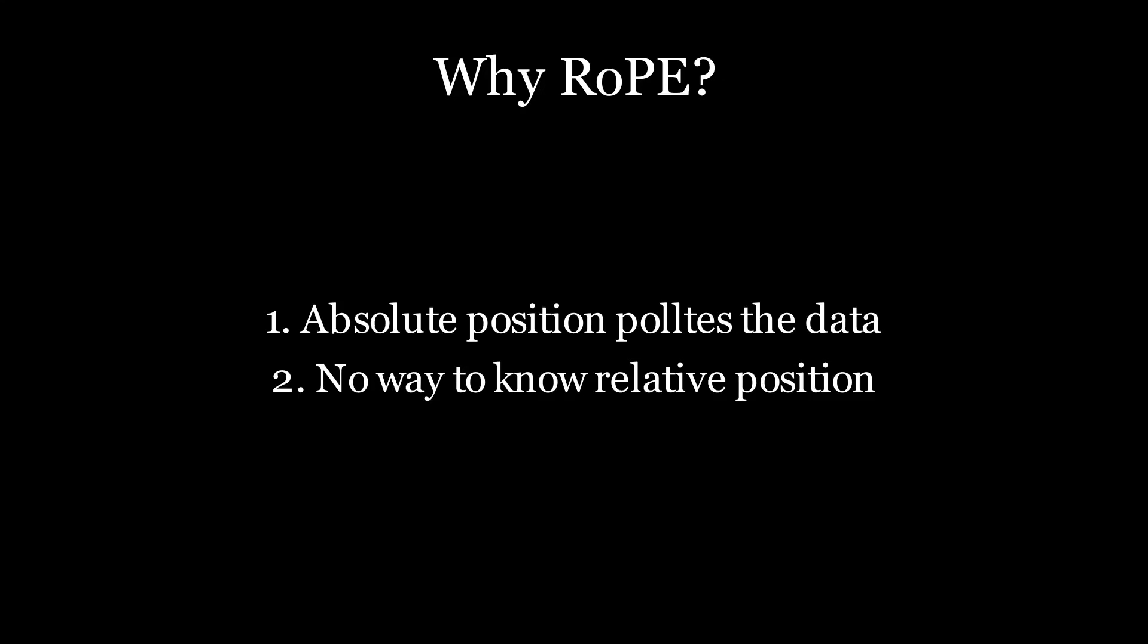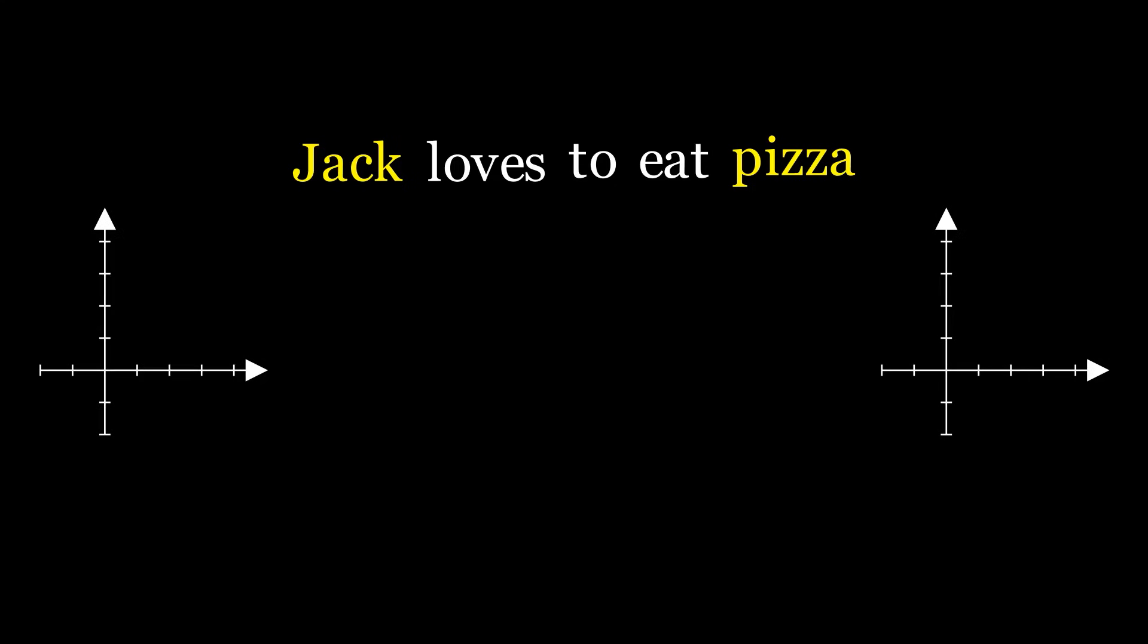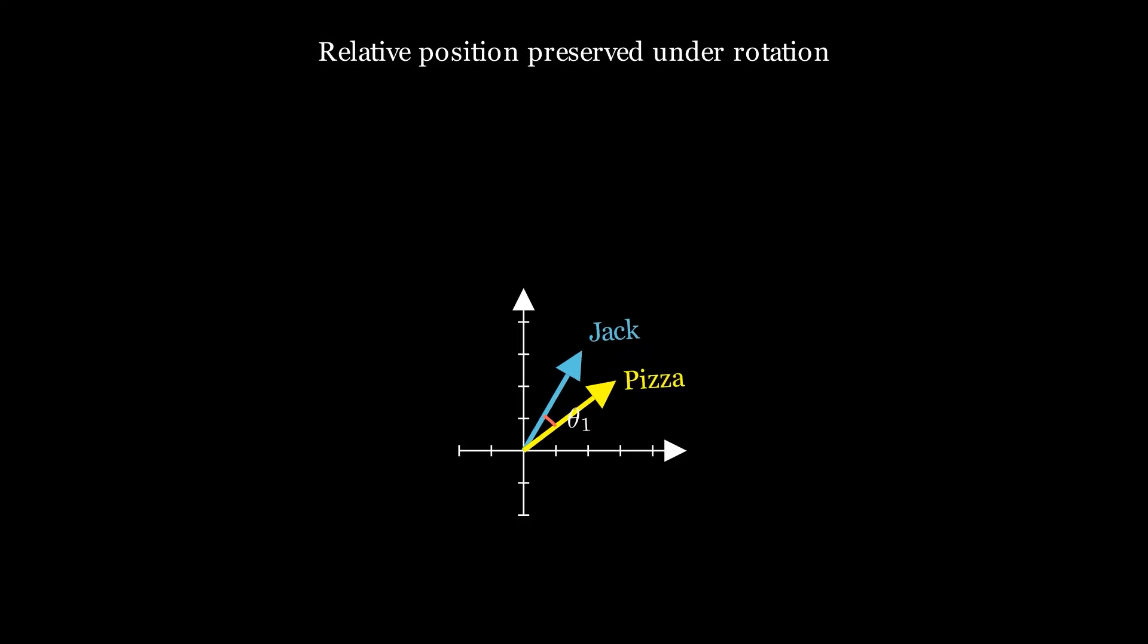This is important because if two words are far apart, they most likely are not strongly related. Let us again start with our example, Jack loves to eat pizza. Now if you take the words Jack and pizza, put them in the coordinate system, we will see that there's an angle that forms between them. ROPE works by manipulating this angle rather than the vectors themselves. So if more words get added between Jack and pizza, it increases the angle, whereas if the whole sentence length is increased or decreased, it still preserves the relative distance between the two words.